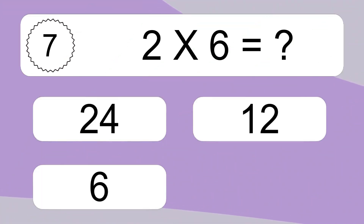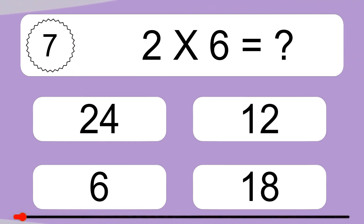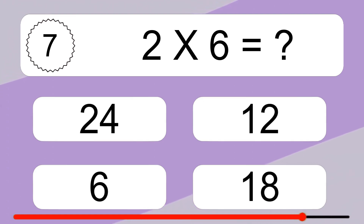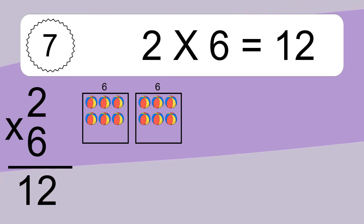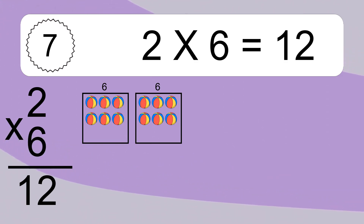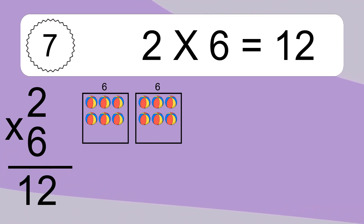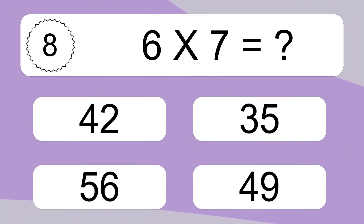2 times 6 equals what? 2 times 6 equals 12. We have 2 boxes, and each box has 6 colorful balls inside. 6 times 7 equals what?